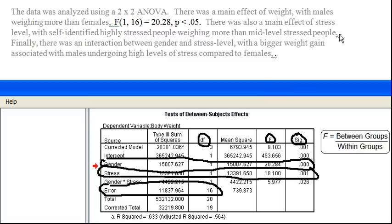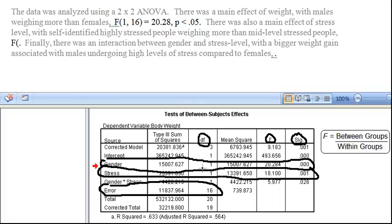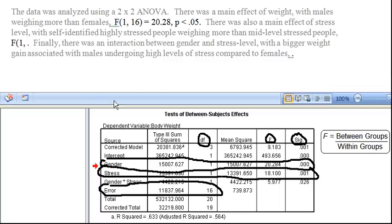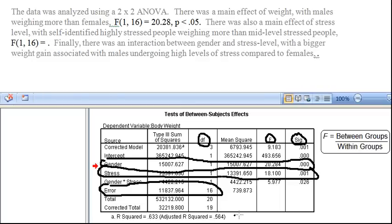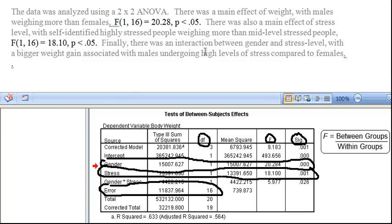Let's share the information needed with our reader. Okay, so F, the degrees of freedom for stress. Well, there are two levels, mid and high. So number of groups minus one. Two minus one, we have one degree of freedom. Our degrees of freedom for within groups is going to be just the same as for gender. It's 16. It is equal to 18.10. And our p-value is less than .05. So our reader knows we get to reject the null hypothesis.